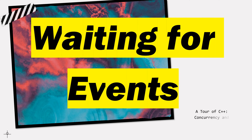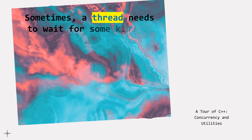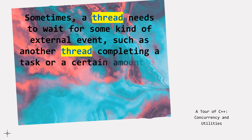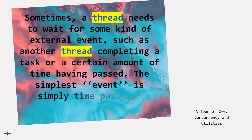Waiting for events. A tour of C++, concurrency, and utilities. Sometimes a thread needs to wait for some kind of external event, such as another thread completing a task or a certain amount of time having passed. The simplest event is simply time passing.